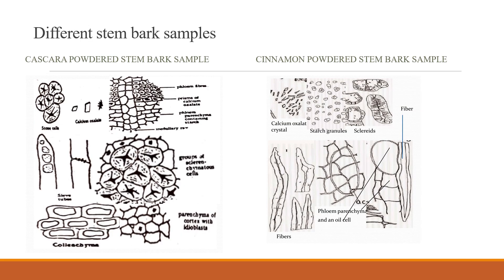Powdered plant samples from similar parts of a plant can be differentiated by examining the types of diagnostic characters viewed under the microscope. For instance, if given cascara and cinnamon powder samples, both samples are obtained from the stem bark of the plant, and as such it is expected to see calcium oxalate crystals in both. Each sample has its own peculiar type of calcium oxalate crystal, which can therefore be used as the basis for identification.